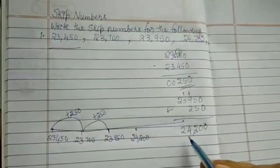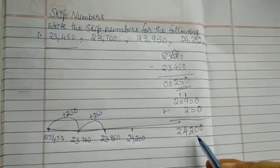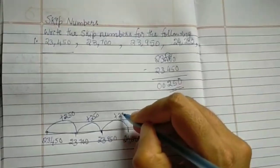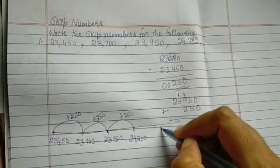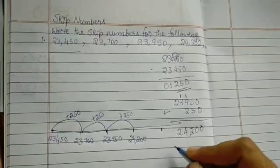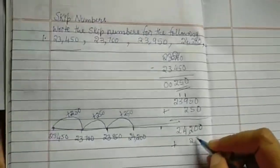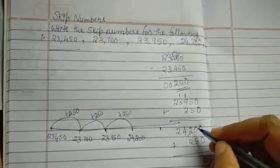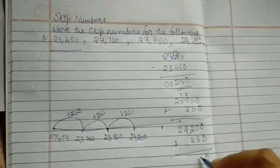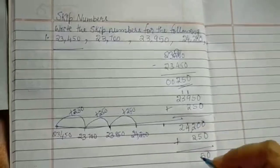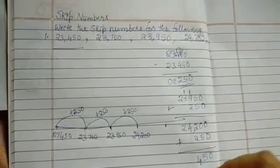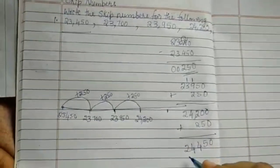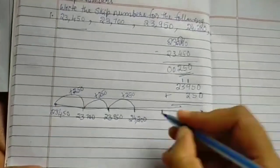I'm writing 24,200 on the number line. Now we need to find the last number. For 24,200 we are adding 250 again: 0 plus 0 is 0, 0 plus 0 is 0, 0 plus 5 is 5, 2 plus 2 is 4, 4 and 2 we write as they are. So the last number is 24,450.